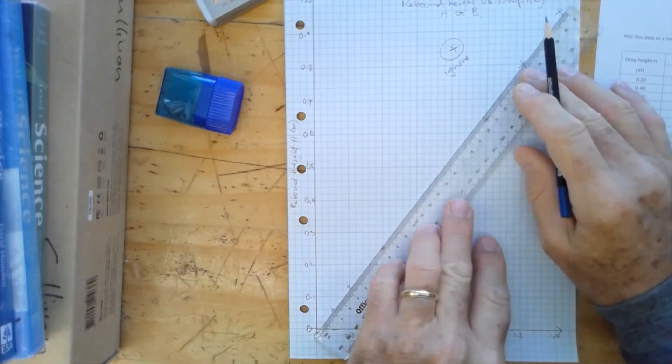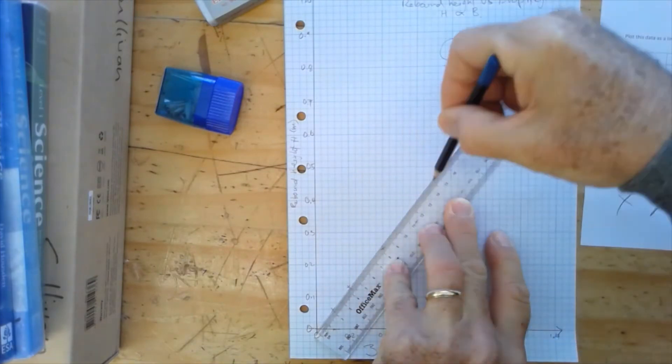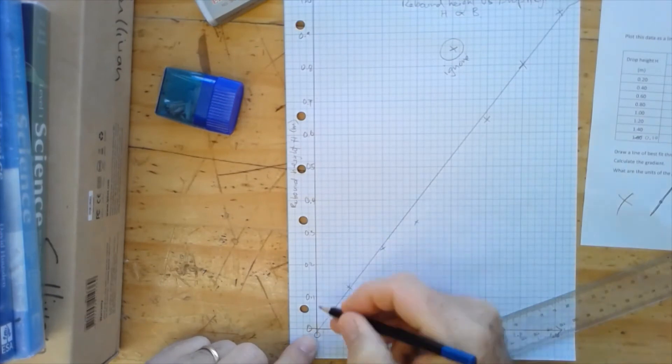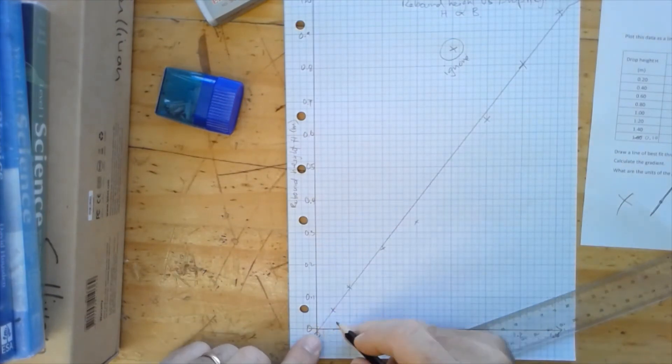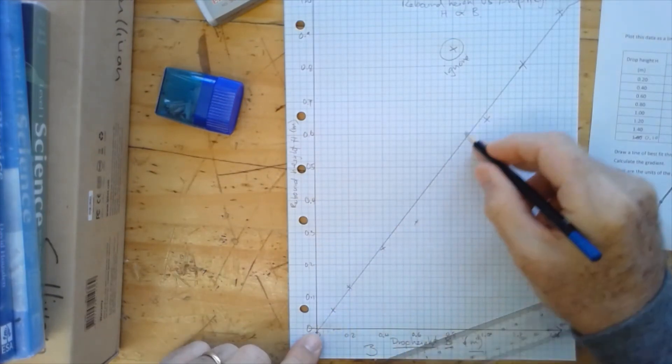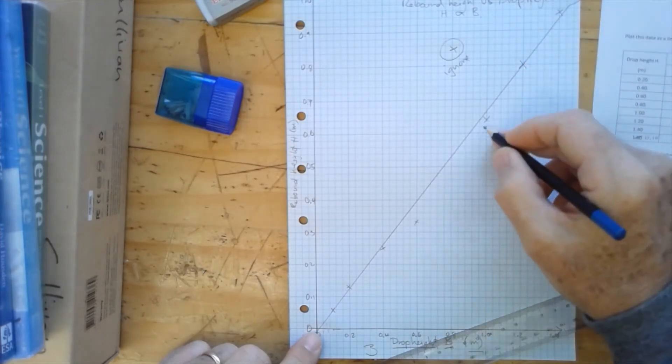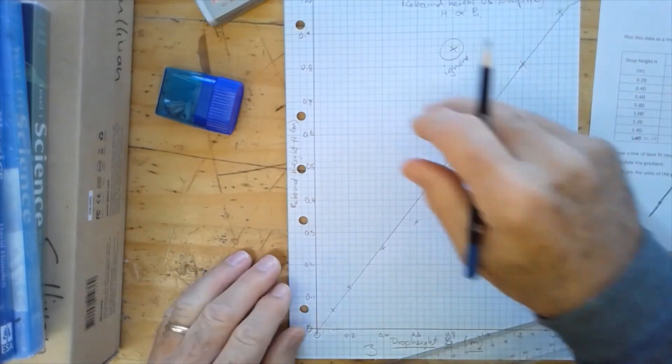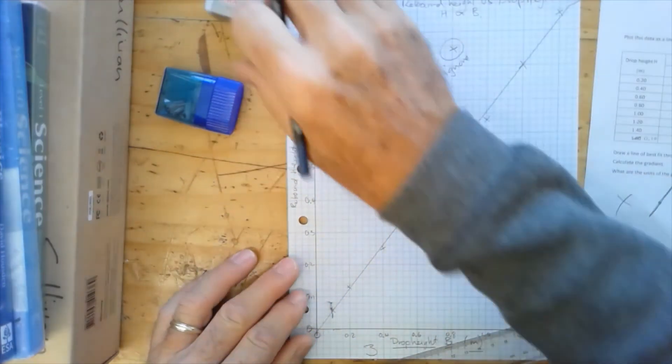And with our couple of guidance things about drawing our line of best fit is we probably need as many points below the line as above the line. That's one thing. So if we have it something like this, we might have one, two, three, four, five points above. Maybe, so let's try this.